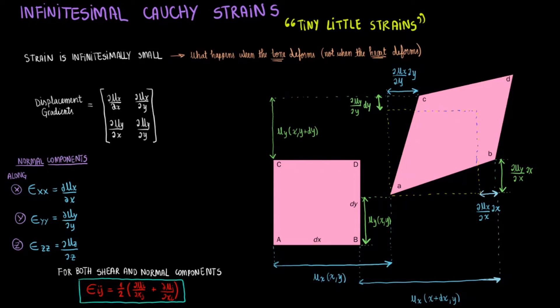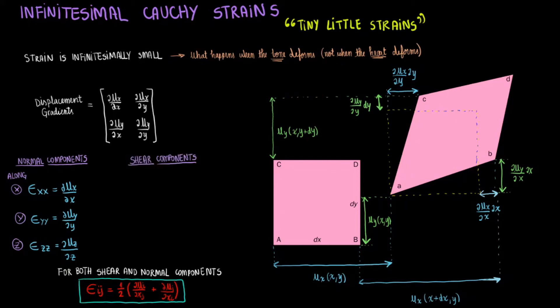Eij, which is the Cauchy strain, equals one-half dui divided by dxj plus duj divided by dxi. If you were trying to find exy, you would get exy equals one-half dux divided by dy plus duy divided by dx.